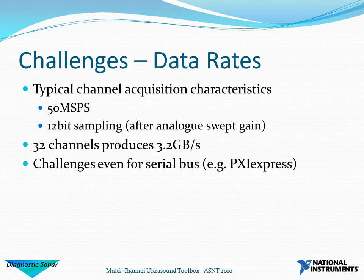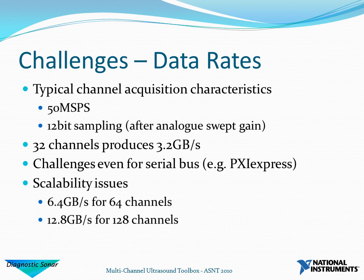For example, if we're dealing with 32 channels in parallel, this is a requirement of 3.2 Gbps, and this will be a challenge even for serial buses such as PXI Express. This becomes even more of a problem when you scale it up to 64 or 128 channels, and data rates of 12.8 Gbps for the 128-channel parallel version is certainly extreme.